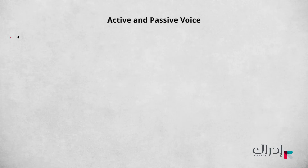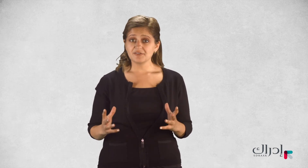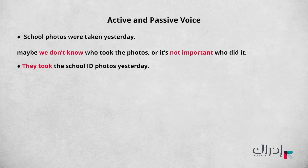Think about the sentence: 'School photos were taken yesterday.' Why do we use the passive? Maybe we don't know who took the photos, or it's not important who did it. In order to give the same information in an active sentence, we say: 'They took the school ID photos yesterday,' or 'Someone took the school ID photos yesterday.' They are both correct, however we use the passive since it talks about the action that happened.